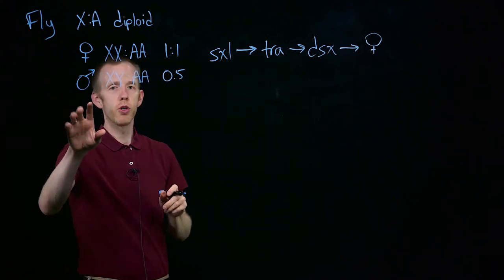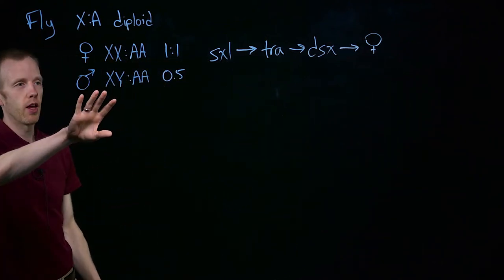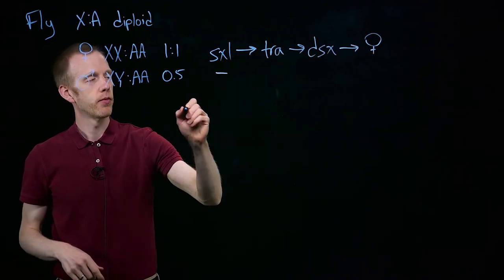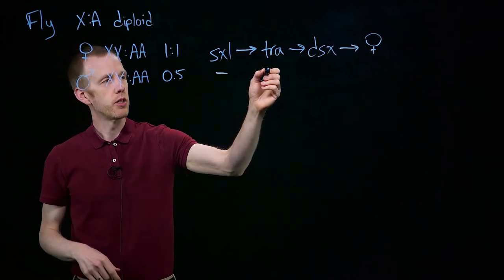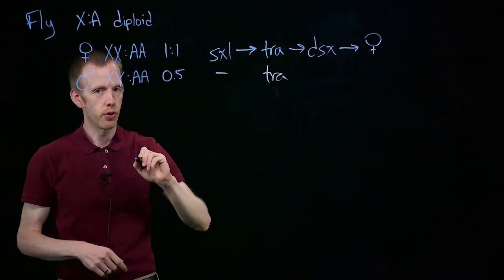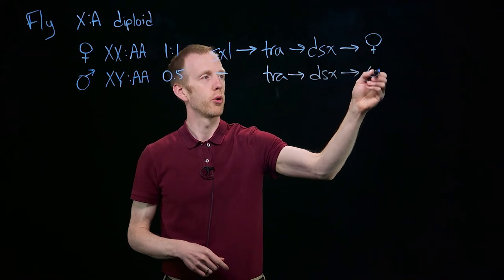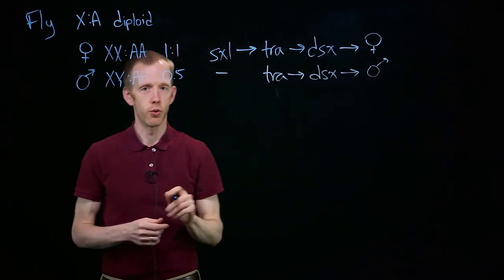And in males, when you have one fewer X chromosome, then you make no sex lethal, which causes a male-specific version of the transformer protein to be made, which encodes a male-specific version of the double sex protein, which produces male individuals.